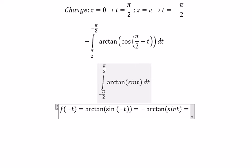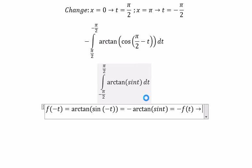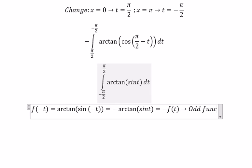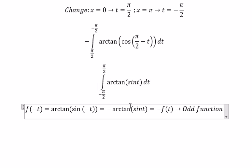This equals -f(t), so this is an odd function. Because this is an odd function and the boundary is symmetric, you get zero.